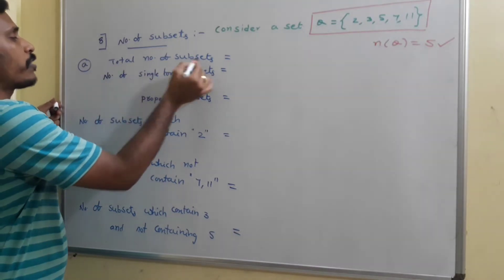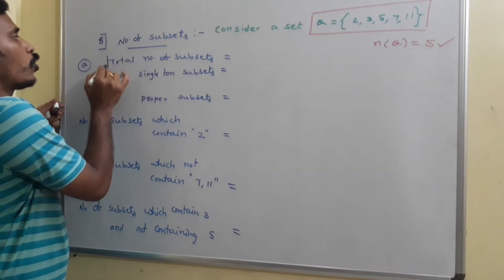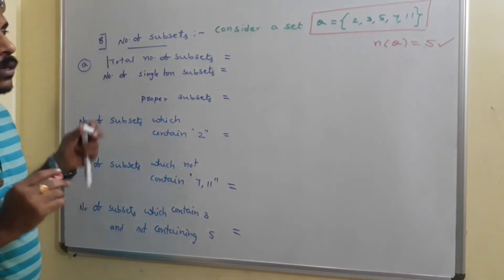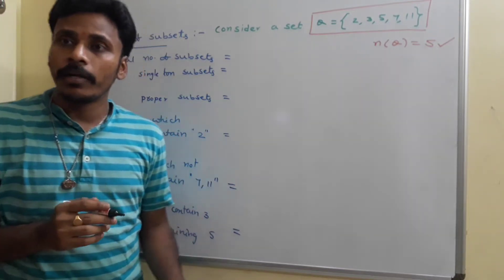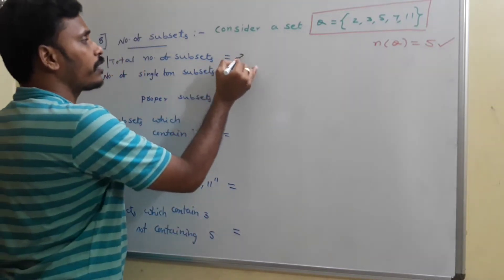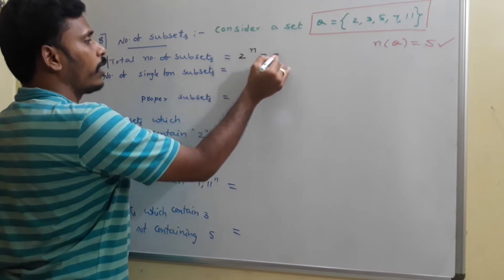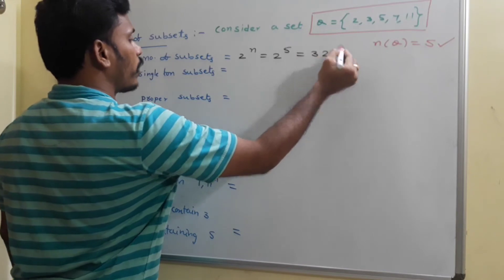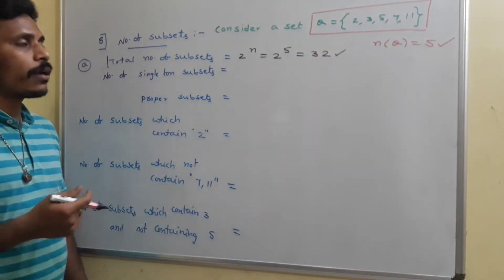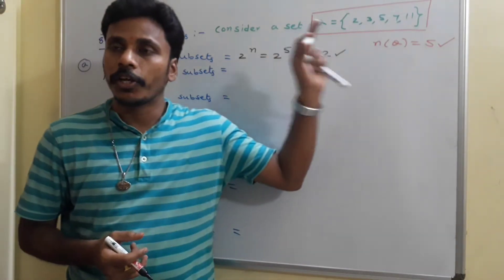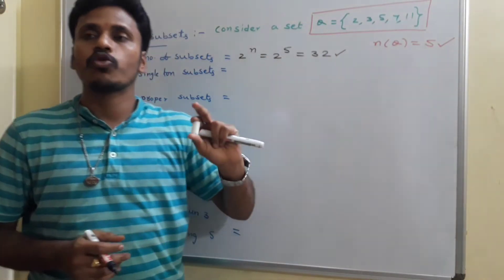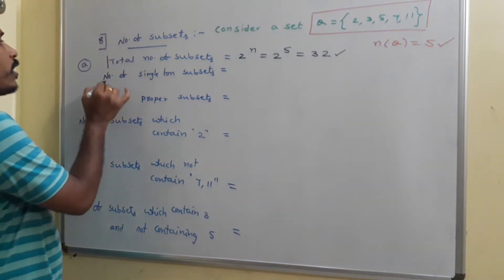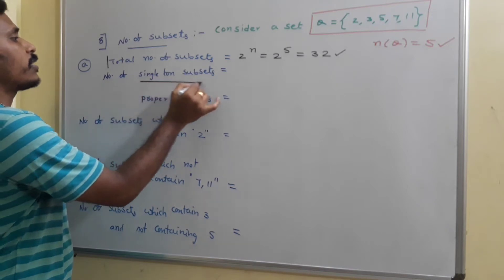The first question: what is the total number of subsets? If a set has n elements, then the total number of subsets is given by the formula 2 power n. Here n is 5, so 2 power 5 equals 32. So the total number of subsets for the given set Q is 32.